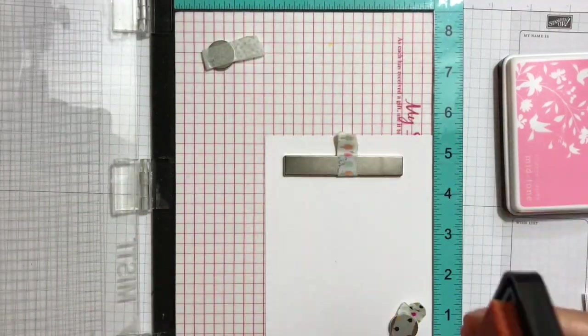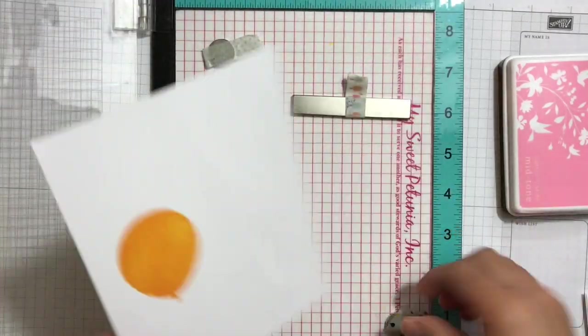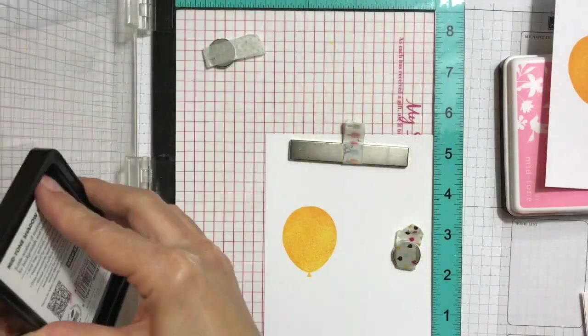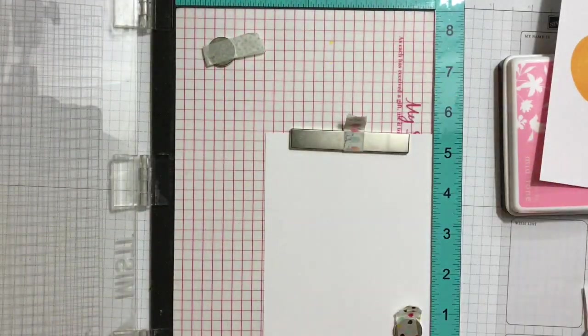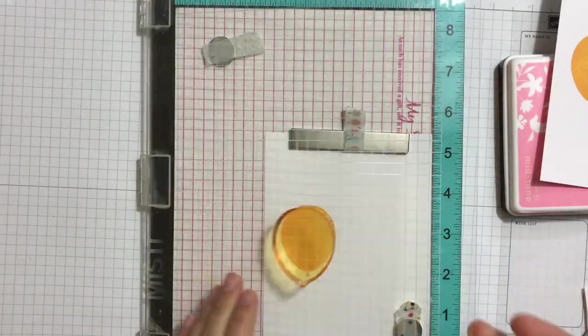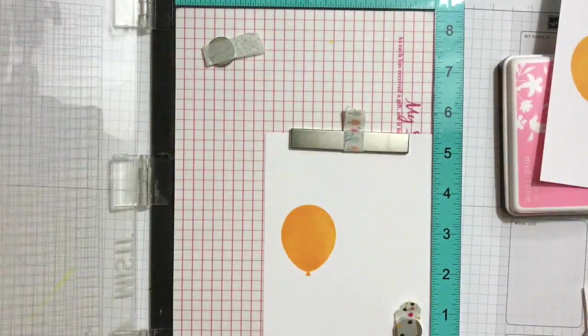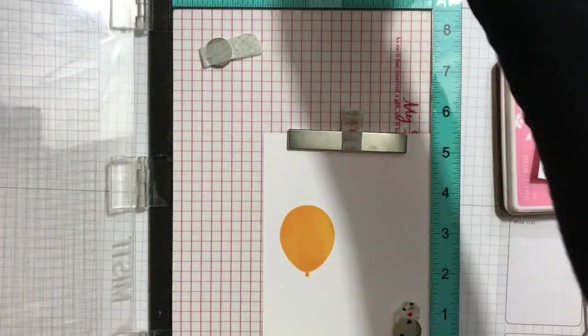So here I'm stamping the solid balloon using the butter bar ink. I'm just stamping multiple images in case I miss one or if I want to make different cards later on. I like having more images available for a quick and easy card when I'm in a hurry.